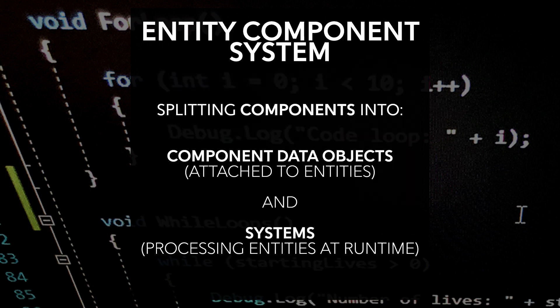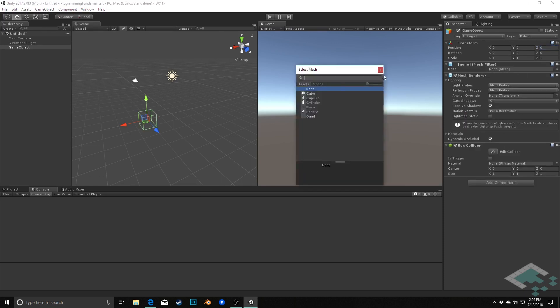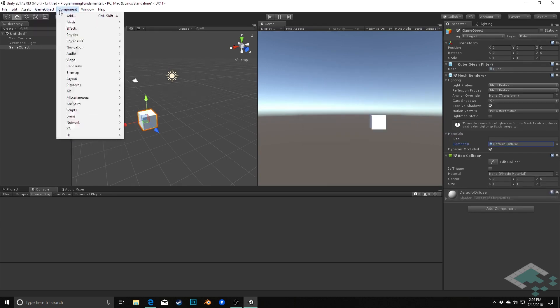The Entity Component System eliminates entire components like transforms altogether, and instead uses individual pieces like position, rotation, and movement to store each piece of data associated with an object. So if you have an object that isn't going to move, all of the code associated with moving — which would be automatically included in a transform — doesn't have to be included anymore. On the flip side, developers have to be a lot more hands-on about what components they want to add. To get better optimization, we have to take more control.